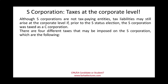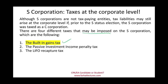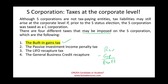Under those circumstances, because the entity previously operated as a C corporation, it could have some situations where it is responsible for taxes at the corporate level. There are four different taxes that might be imposed on the S corporation: built-in gains tax, passive investment income tax, LIFO recapture, and the general business credit recapture. Under those four circumstances, the S corporation will be responsible for paying corporate-level taxes, which violates the concept of the S corporation.